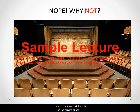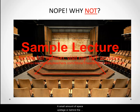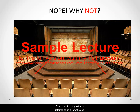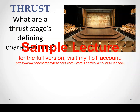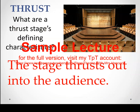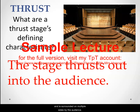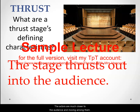Here you can see that the bulk of the playing space where the actors will perform is sticking out far past, or downstage from, the proscenium arch. The small amount of space upstage or behind the proscenium is suitable for scenery, but very little action can occur back there. This type of configuration is referred to as a thrust stage. The stage thrusts out into the audience, meaning that the action occurs closer to the audience and is surrounded on multiple sides. It is a more intimate type of theater because there is not the separation of the proscenium arch, and the actors are much closer to the audience and moving among them.